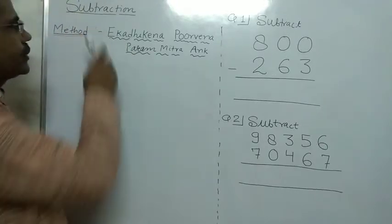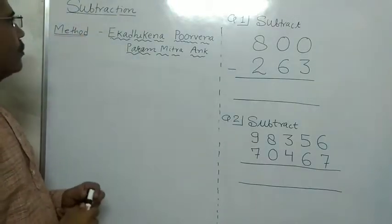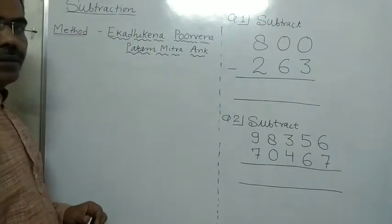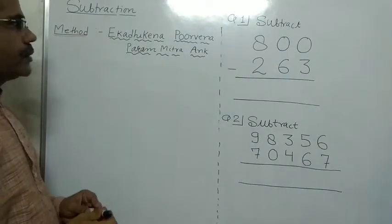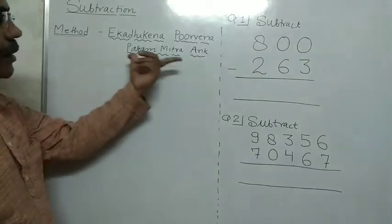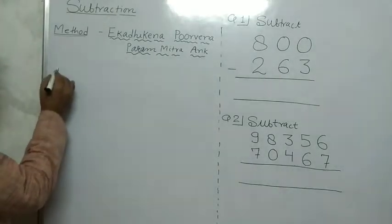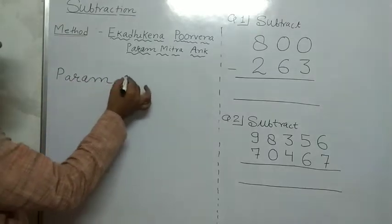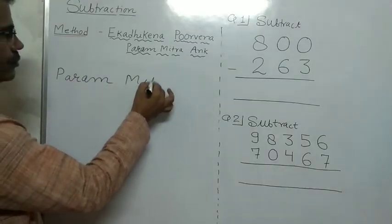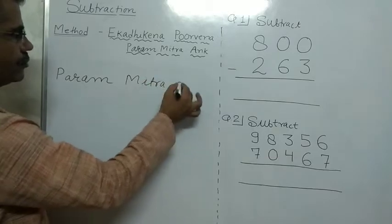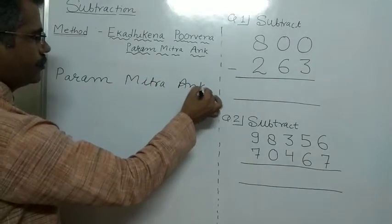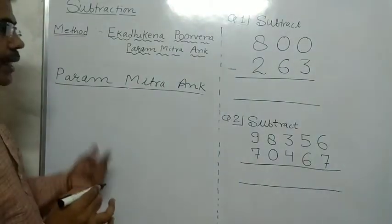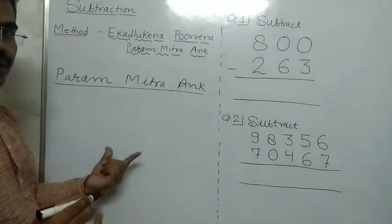Next topic: the Ekatecane Purvend Pramikkar Ankh method. It was introduced by Pramikkar Ankh. We write the first set of the first 9 natural numbers.